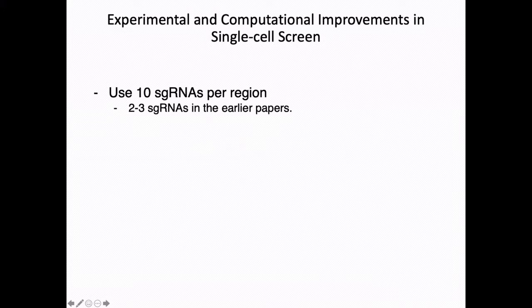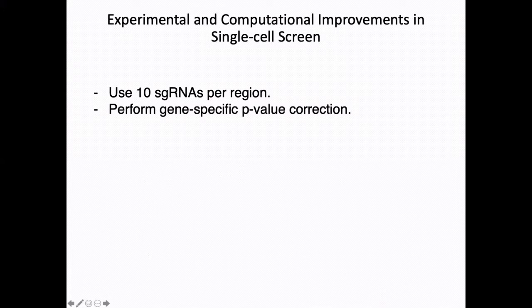We have done two major optimizations for the assay. First, experimentally: all the older papers used two to three guides per region, and we thought individual guides might cause strong off-target effects and increase noise. So in this case, we use 10 guides per region to really minimize off-target effects introduced by individual guides. Second, computationally, we performed gene-specific p-value corrections for our results, which turns out to work really well.